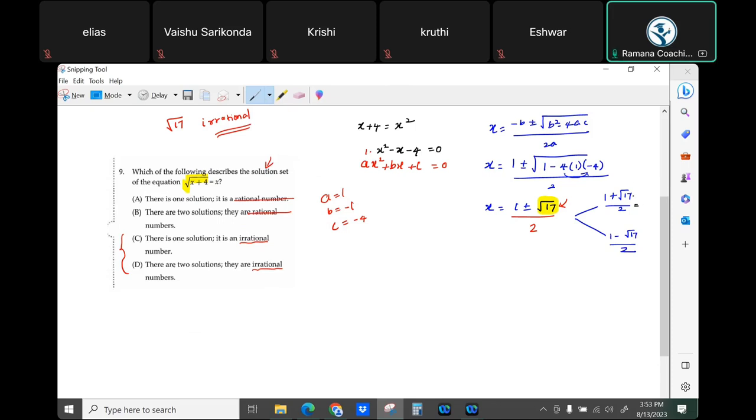If you simplify this, isn't it about 4.1? Square root of 17 is probably close to 4.1 because it is little more than 16, right? So 4.1. What is 4.1 plus 1? 5.1. 5.1 divided by 2?